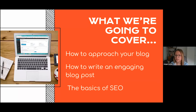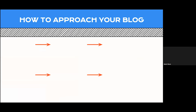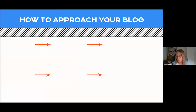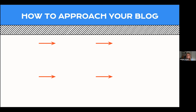How to approach your blog — well, what is blog writing? First and foremost, a blog is an informational and educational tool. The aim of a blog is not to convert somebody there and then. It is content, not copy. So let's have a quick look at the difference between the two. A lot of people use content and copy interchangeably, and while it's not super important, there is a slight difference to be aware of.